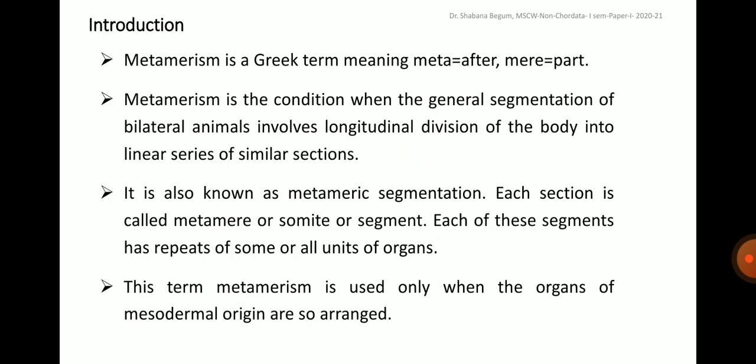Coming back to the introduction of the topic, the word metamerism is a Greek term meaning meta means 'after' and mere means 'part.' Metamerism is the condition when the general segmentation of bilateral animals involves longitudinal division of the body into a linear series of similar sections. It is also known as metameric segmentation, and each section is called a metamere or somite or segment, and each of these segments has repeats of some or all units of organs. Serial segmentation of the body along an anterior-posterior axis is called metamerism.